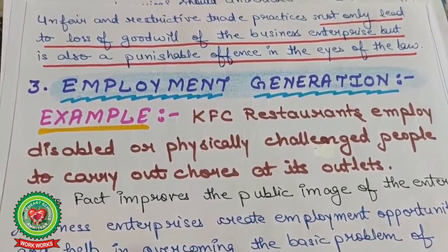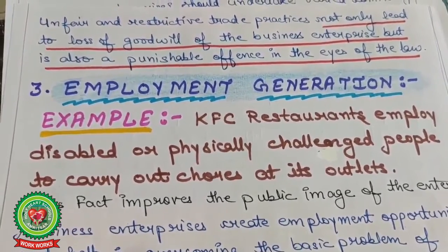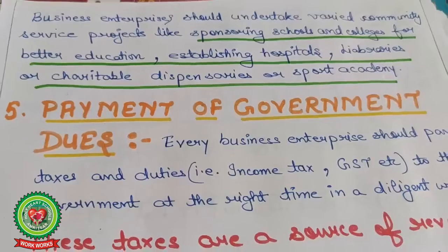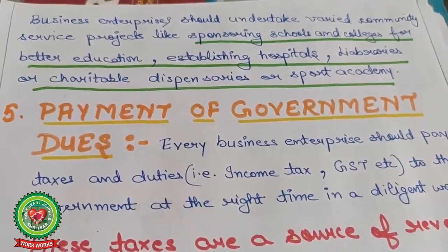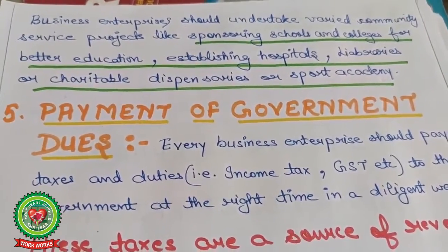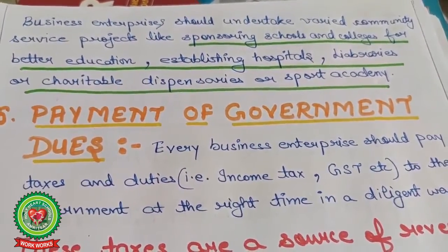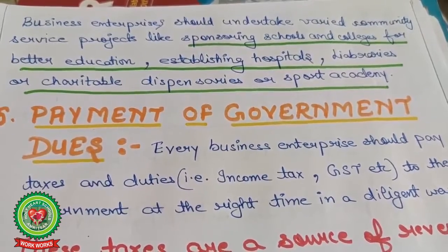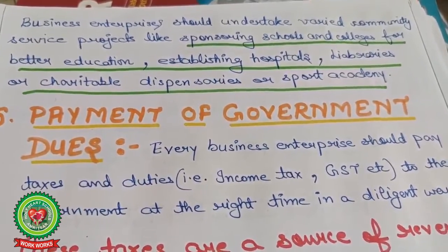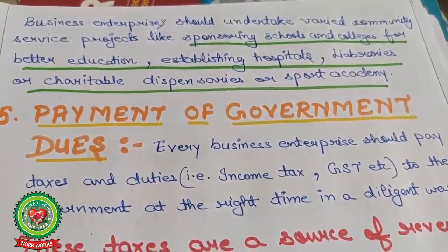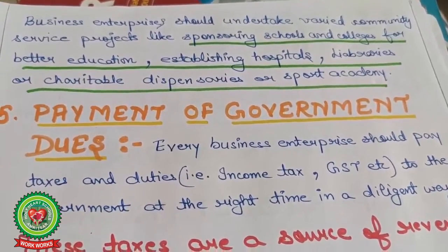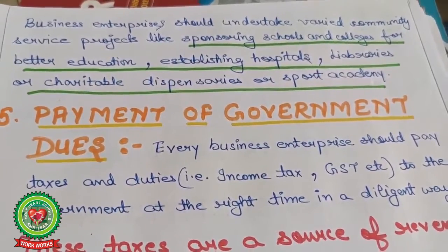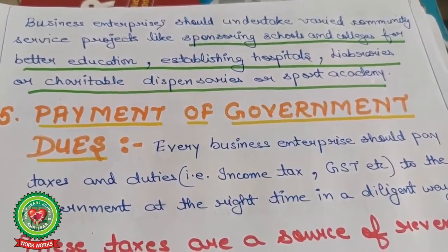Nowadays, consumer forums are available at the district level, state level, and national level. NGOs are also available for these social services. Business enterprise should undertake varied community service projects like sponsoring schools and colleges for better education, establishing hospitals, libraries, charitable dispensaries, or sports academies. Businessmen also provide scholarships to meritorious students.